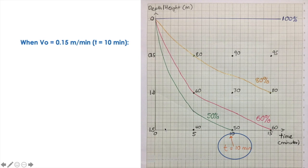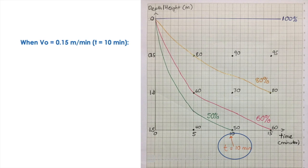Basically what it means: when your boss asks you to design a tank with V0 equal to 0.15 meter per minute, they are asking you to design a tank with a detention time of 10 minutes. So the water entering that sedimentation tank will stay in the tank for 10 minutes before it goes out to the next process, which is filtration. So how many percent can be removed when it stays for 10 minutes in that tank?